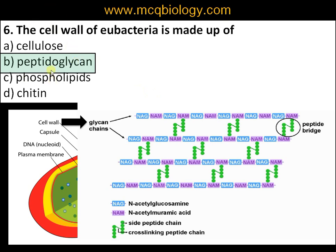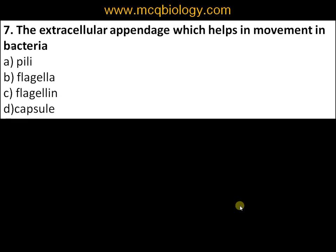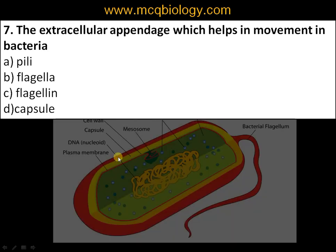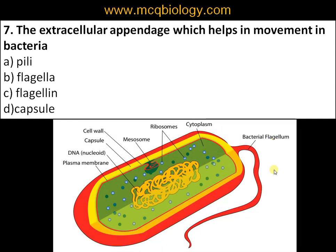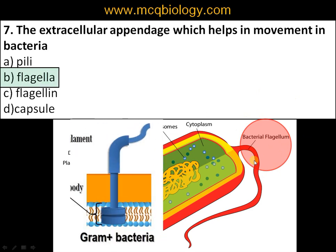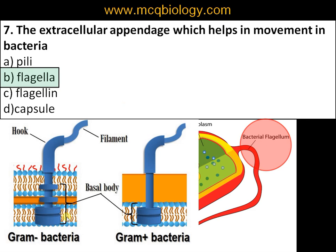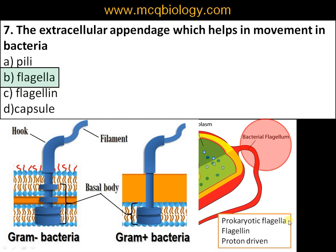Question number seven: the extracellular appendage which helps in movement in bacteria is called: A) pili, B) flagella, C) flagellin, D) capsule. The structure involved in movement or locomotion is called a flagellum. A bacterial flagellum has three parts: a basal body, a hook, and a filament. It is made up of a protein called flagellin, and the driving force is the movement of protons. In eukaryotic flagella, the protein is tubulin and it is ATP-driven.